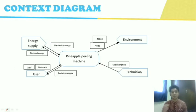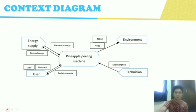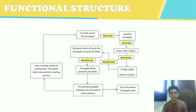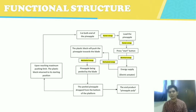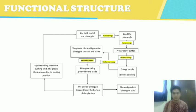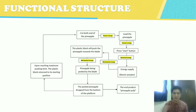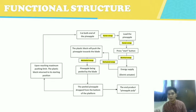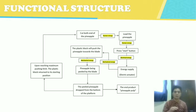Next we have our context diagram, where we have energy supply, user, environment, and technician. Next is the functional structure. Our function starts by cutting both ends of the pineapple, then loading the pineapple and pressing the start button, so that energy supply converts electrical energy to mechanical energy. This triggers the plastic block to push the pineapple toward the blade. The pineapple is peeled by the blade. After the peeling process is finished, the pineapple drops to the bottom of the platform. After finishing, the plastic block returns to its starting position due to the maximum pushing limit.